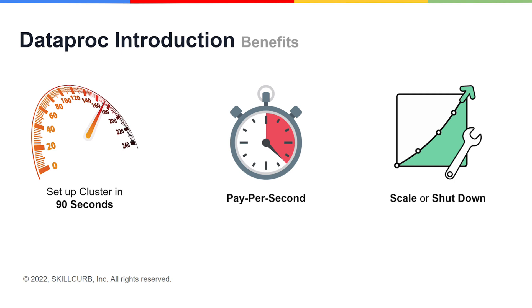Here are the major benefits of working with Dataproc. The first one is speed and the way in which you're charged. To set up a cluster that's ready to go takes about 90 seconds. Then once the resources are up and running, you're charged per second with a minimum billable of one minute. This means you can set up shop and process data sets, scale up or down an existing cluster, or even turn it off entirely if required, and pay only for what you've used.